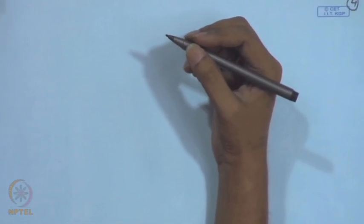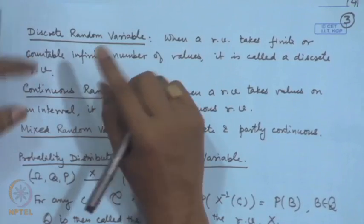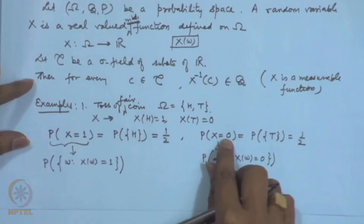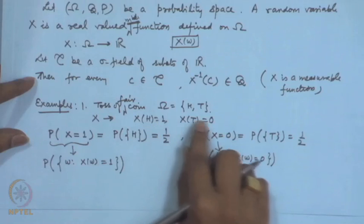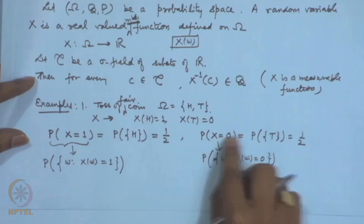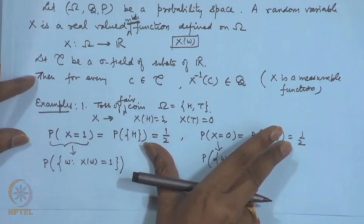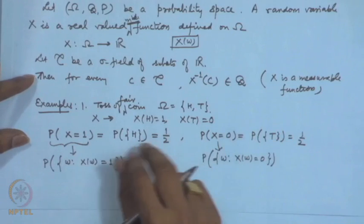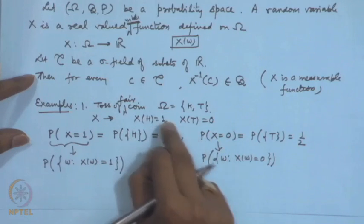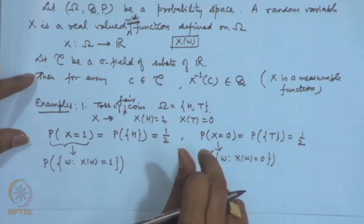Let us describe the special cases in detail. For a discrete random variable versus a continuous random variable, the description of the probability distribution is not the same. In the coin-tossing example with 1 coin or 3 coins, we are able to allocate probabilities to individual values. For 1 coin, X takes values 0 and 1 each with probability 1/2; the total sum is 1. Since X is discrete, this is called the probability mass function.